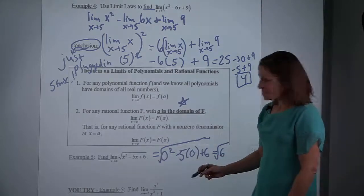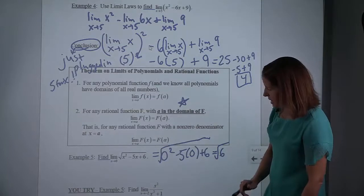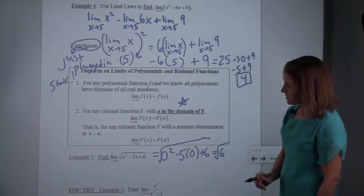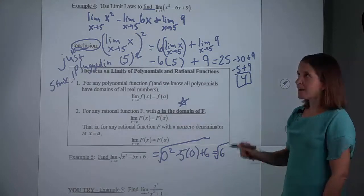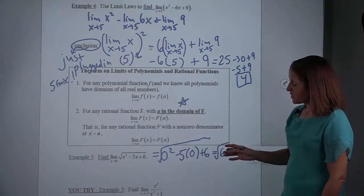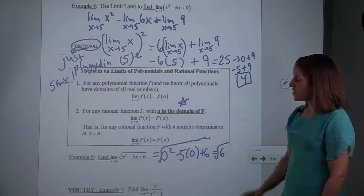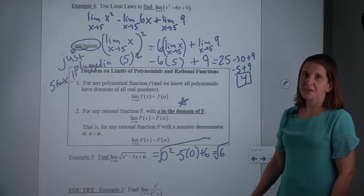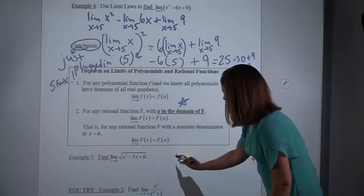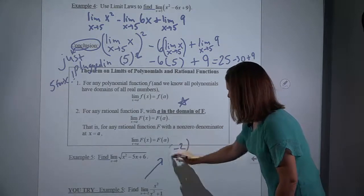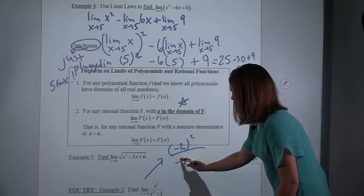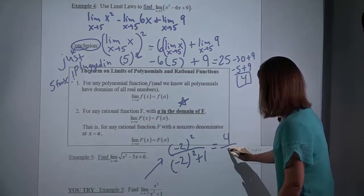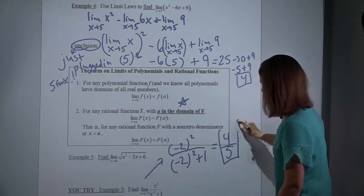The example at the bottom is a you-try: we have x squared over x squared plus 1, and you're seeing what happens as x approaches negative 2. As long as plugging x equals negative 2 into that function does not cause division by 0 — and it doesn't — then you just plug in. I would like you to take a second, pause the video, and give that you-try example. What you should have done is simply replace x's with negative 2, and you get 4 fifths — we have to be careful with squaring negative numbers.